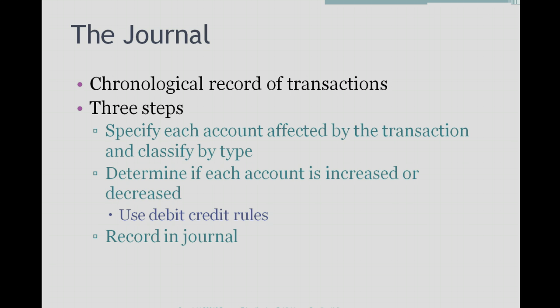You follow three steps to record transactions in the journal. First, we need to identify each account affected by the transaction and classify it by type — whether it's an asset account, a liability account, and so on. Next, we determine whether each account is increased or decreased. And then we use our debit-credit rules to record those transactions in the journal.